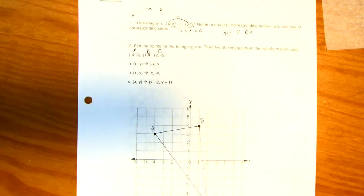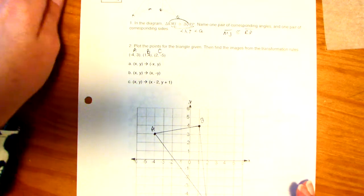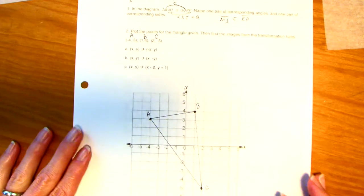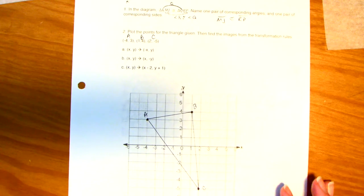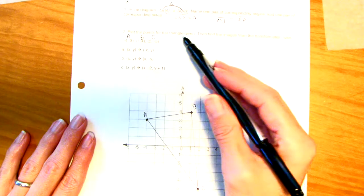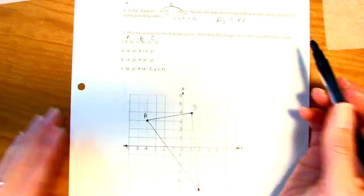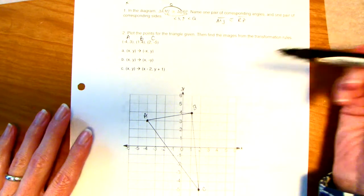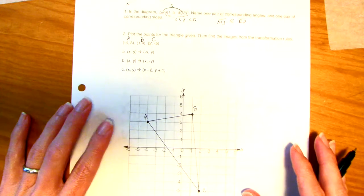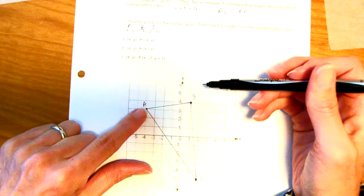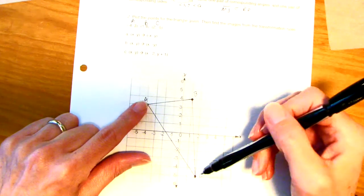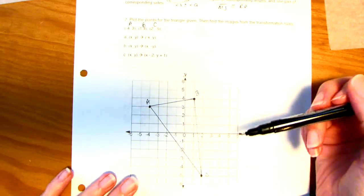The next part, I know this is a big warm-up, but hang in there. You're going to have your paddy paper, the tissue paper, the tracing paper for this. You need three sheets. First of all, plot the points for the given triangle. Then find the images from the transformation rules. I want you to figure out what's happening here. I went ahead and plotted A, B, and C. You can pause that and do that right now.